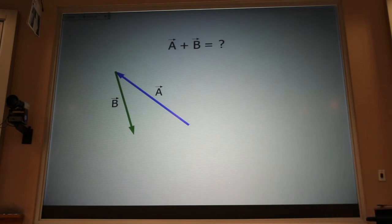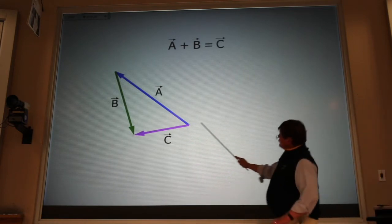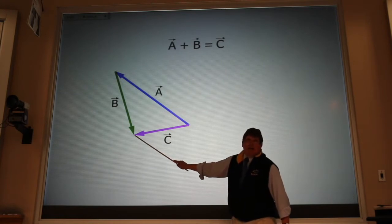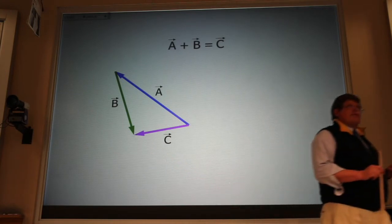And then the sum, the resultant vector, is the vector that goes from the first starting place to the last ending place as the crow flies.